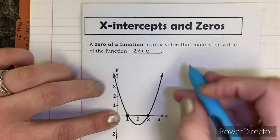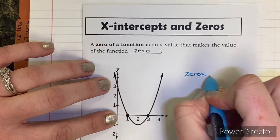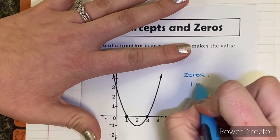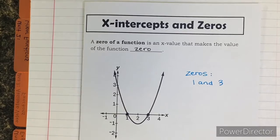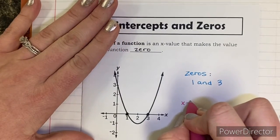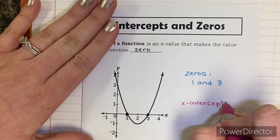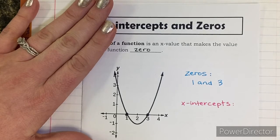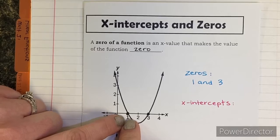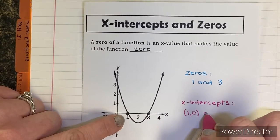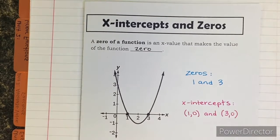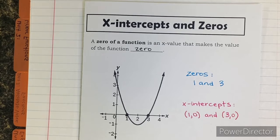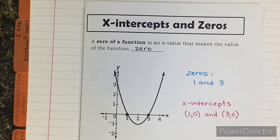There's a difference between the two. Zeros are just the numbers of where it actually happens — zeros are one and three. X-intercepts are talking about those same points, but we need the ordered pairs. X-intercepts always have to be ordered pairs. So the ordered pair of this point is (1, 0), and the ordered pair of that point is (3, 0). They are talking about the same spot on the graph, but they are very different things, so please be careful — it will show up on a lot of tests.